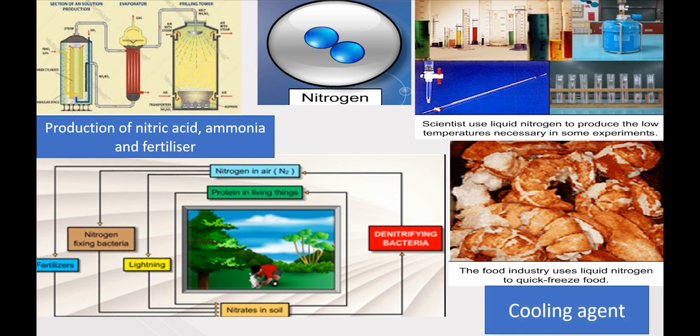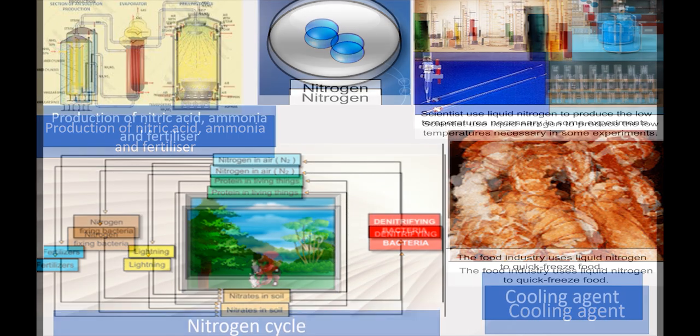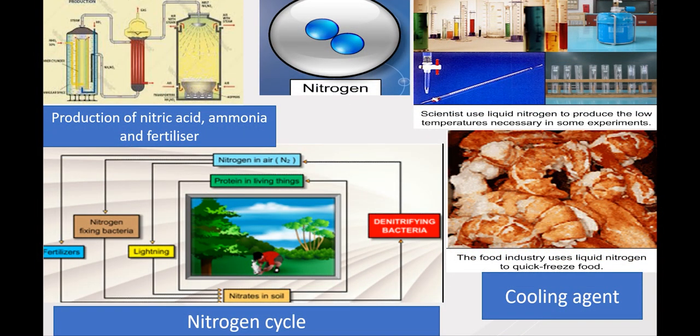Liquid nitrogen's temperature is around negative 196 degrees Celsius and it is used for a variety of things. For example, scientists use liquid nitrogen to produce the low temperatures necessary in some experiments, and the food industry uses liquid nitrogen to quick-freeze food. Nitrogen is also involved in the nitrogen cycle.